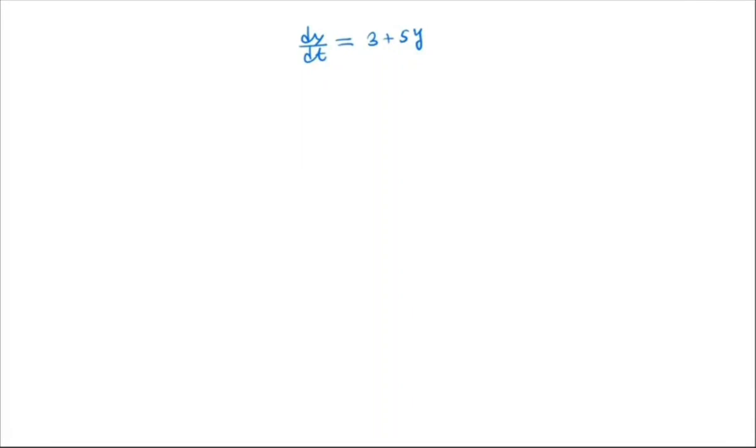Hi everyone, welcome to my channel. Now we will try to solve the following ODE: dy/dt = 3 + 5y. Note that this is a separable ODE because here we can separate y and t successfully. How we separate: we can write it as dy/(3 + 5y) = dt.